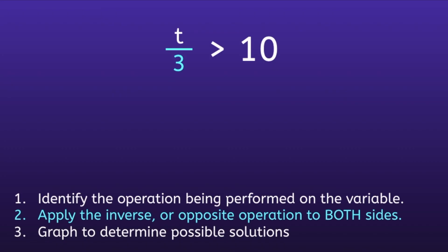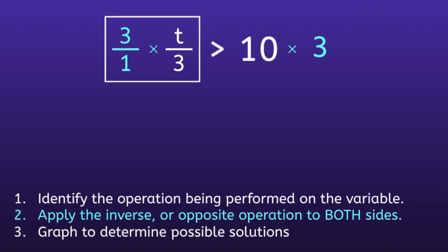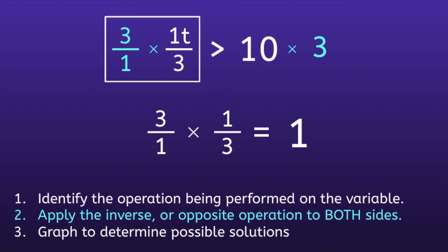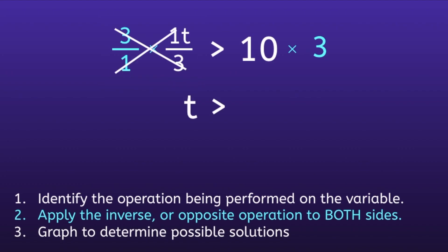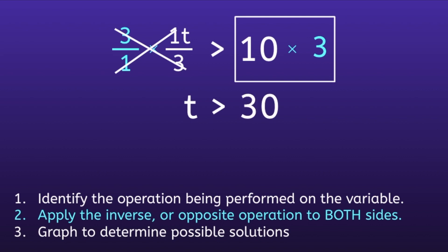Step 2: Apply the inverse or opposite operation to both sides. The opposite of dividing by 3 is multiplying by 3. On the left side, there's an invisible 1 in front of the t. Multiplying the fractions gives 3 over 3, which equals 1 — so we cross out the 3's and the 1's, leaving just t. On the right side, 10 times 3 equals 30. So the final inequality is t is greater than 30.